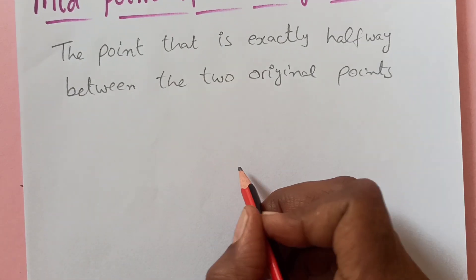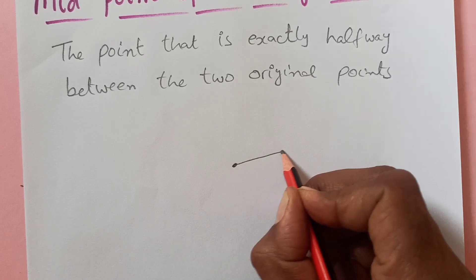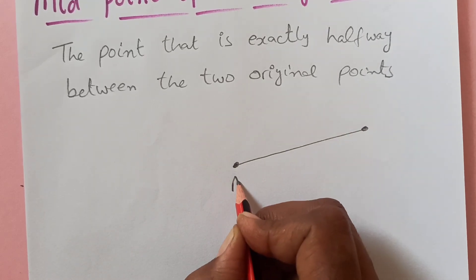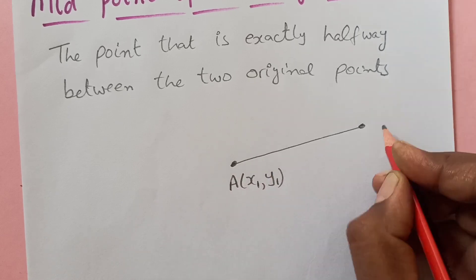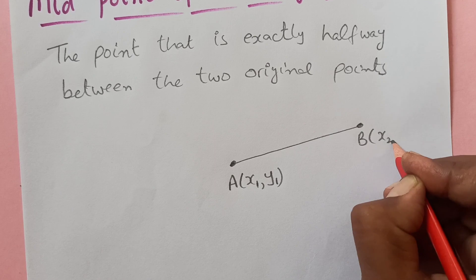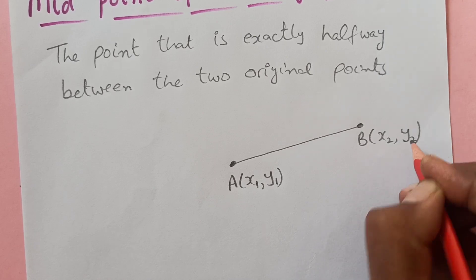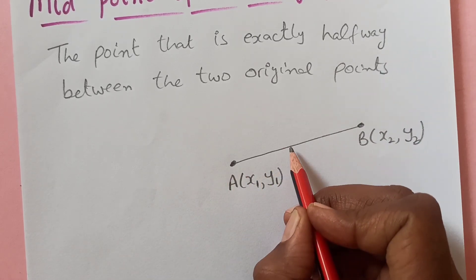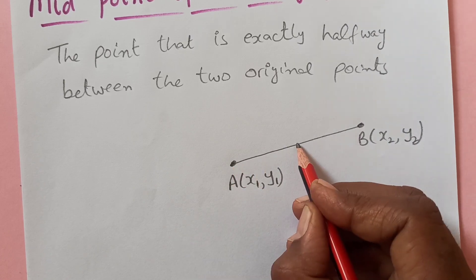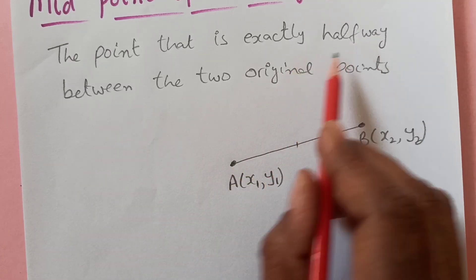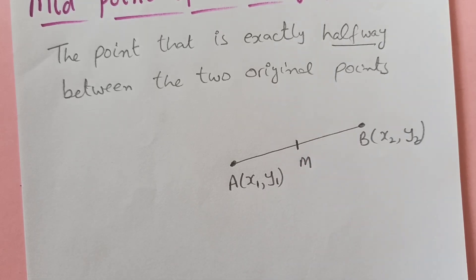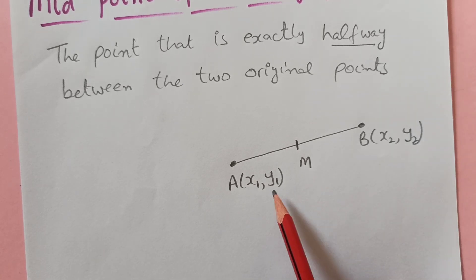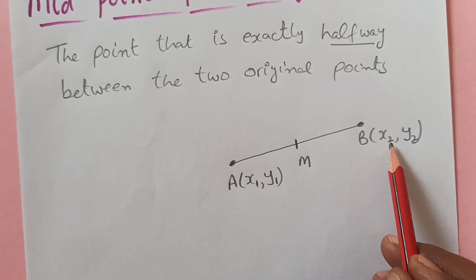For example, let us say I am taking this line — just a rough diagram. So let us say this point is A having coordinates x1, y1 and this is point B having coordinates x2, y2. So we are looking for a point which is exactly halfway between them. Let us say this point is M. So now how to find out the coordinates of M?